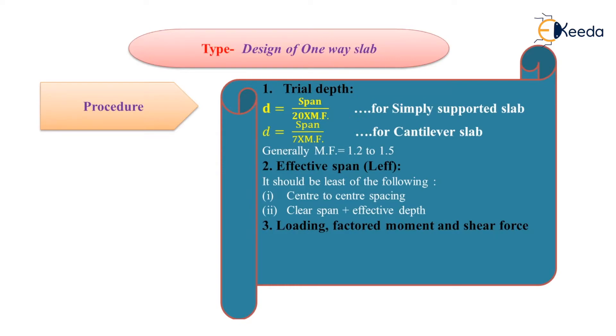Next step is area of tension steel. Here is a very important formula. You can use this formula to calculate area of tension steel for any member of RCC, like beam, slab, columns, etc.